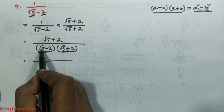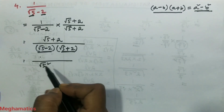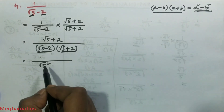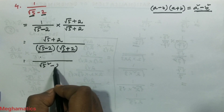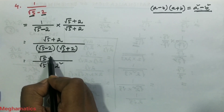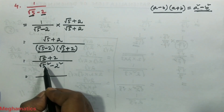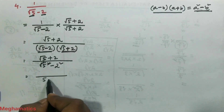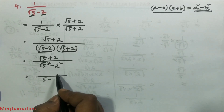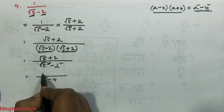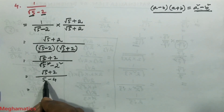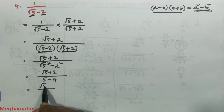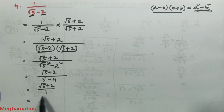Since square and root cancel, root over 5 squared becomes 5. And 2 squared is 4. So the denominator is 5 minus 4, which equals 1. The numerator is root over 5 plus 2. Since the denominator is 1, we do not need to write it, and the answer is simply root over 5 plus 2.